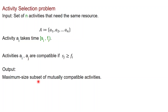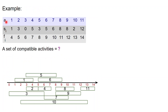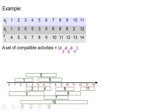Going back to the example from before, you want to take as many classes as possible, of course avoiding conflicts. Here is a set of 11 activities, each with a start time and a finish time. For example, activity six has a start time of five and a finish time of nine. The activities are plotted here — activity six starts at five and ends at nine. You want to take a maximum size set of compatible activities. One set of compatible activities is, for example, to do activity three first, then nine, and then 11.